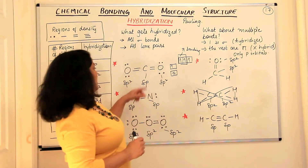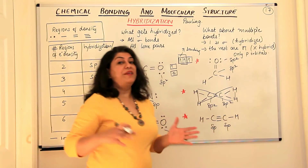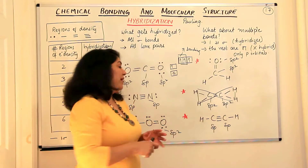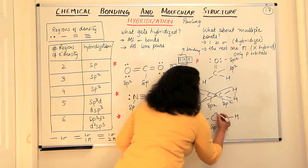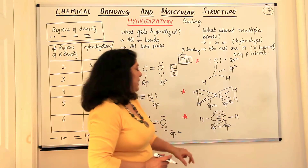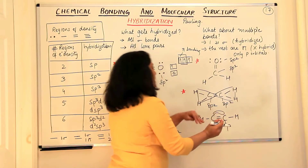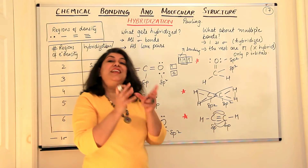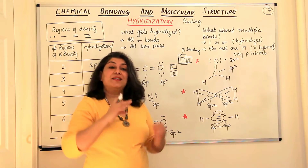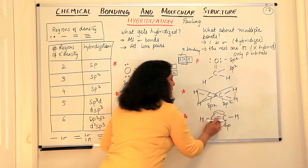For ethyne with sp hybridization, two p orbitals that did not participate in hybridization are aligned along px and py. If the internuclear axis is along z, sideways overlap of py gives one pi bond (lobes on top and bottom), and px gives another pi bond (lobes in front and behind). Overall the molecule appears cylindrical — sigma bond in the middle with four lobes of electron density surrounding it.